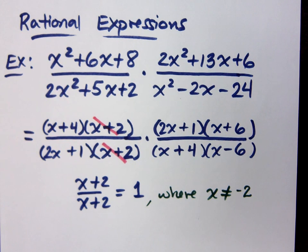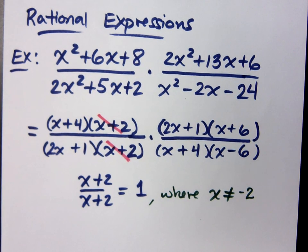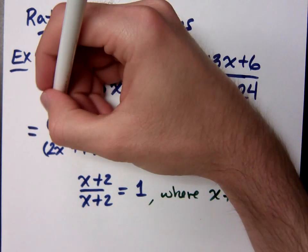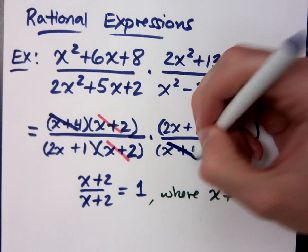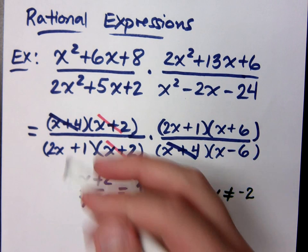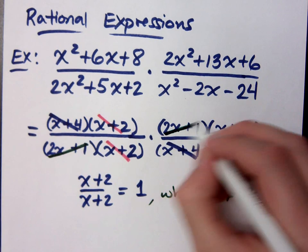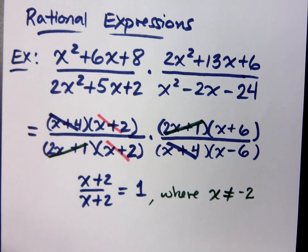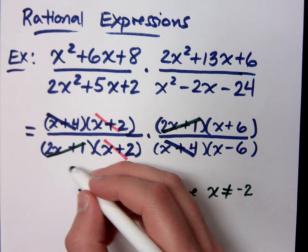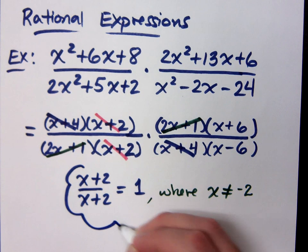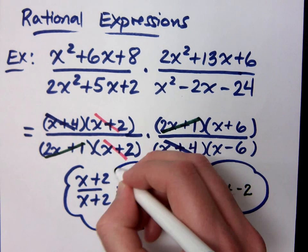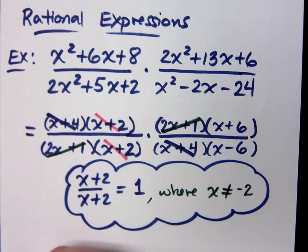What are the other things that I get to simplify away? Common factor of x plus 4 here, and here, and then what? 2x plus 1. 2x plus 1. So what is my answer? 2x plus 6 over x minus 6.